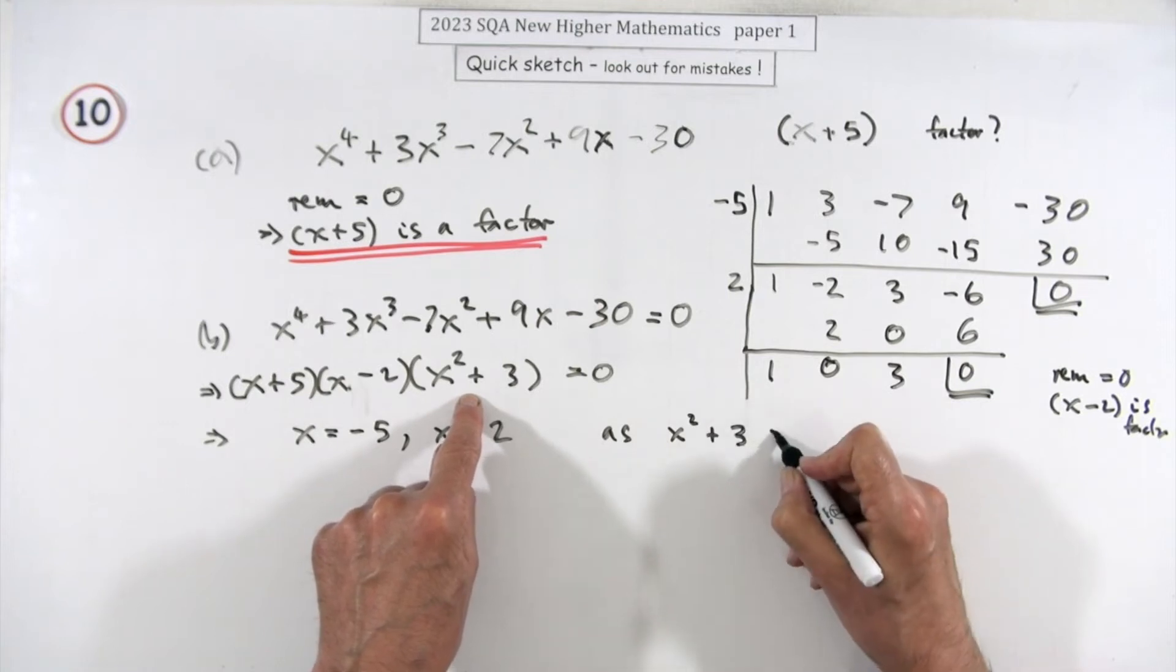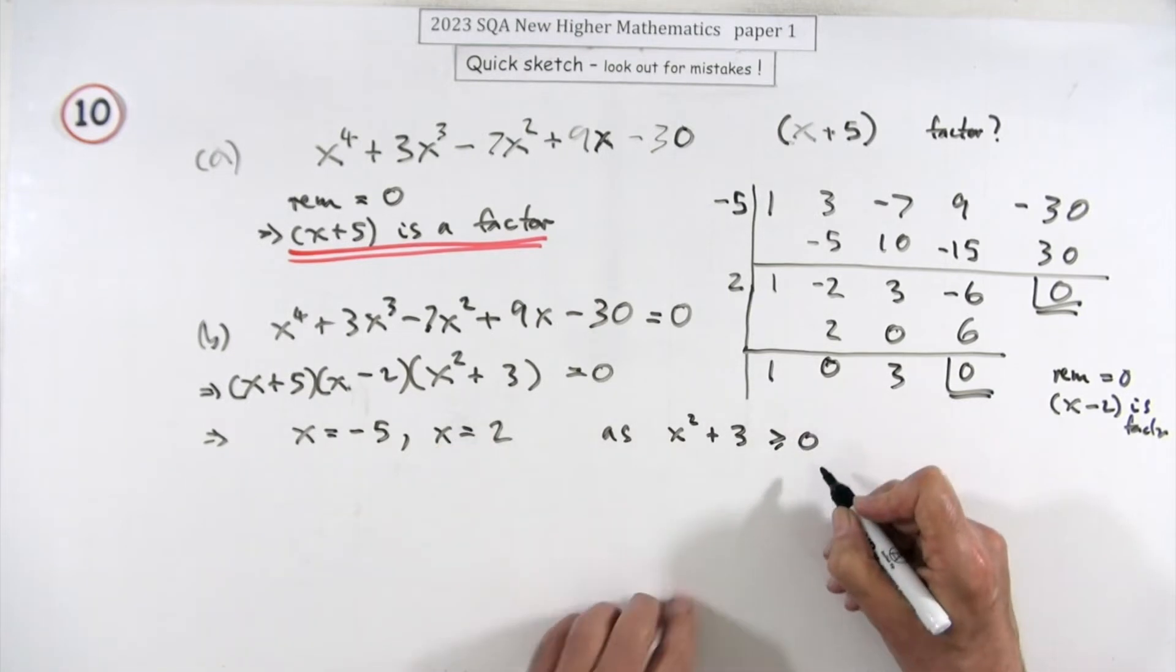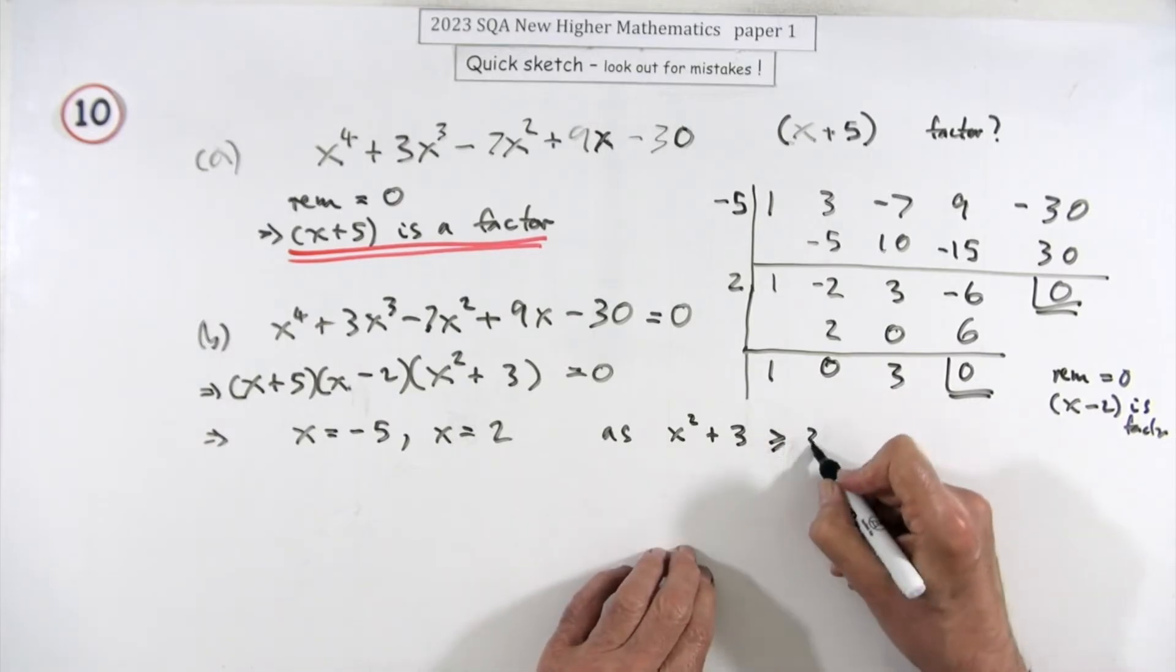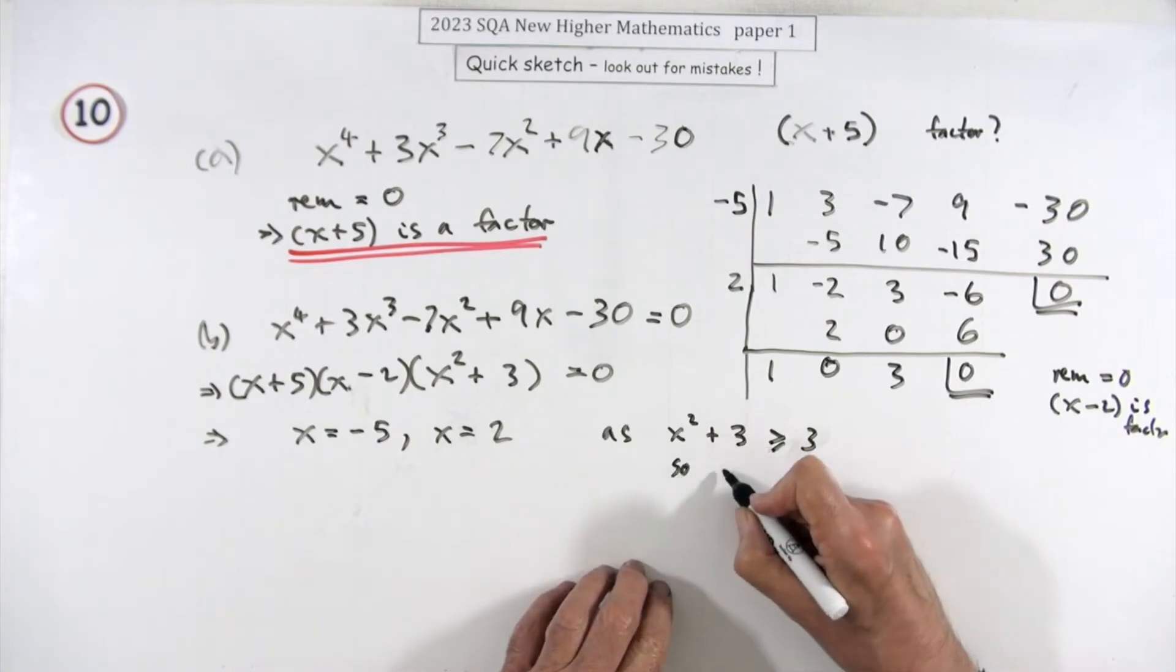Better give a reason for this: x² + 3 is always greater than or equal to three, so no solution from that factor.